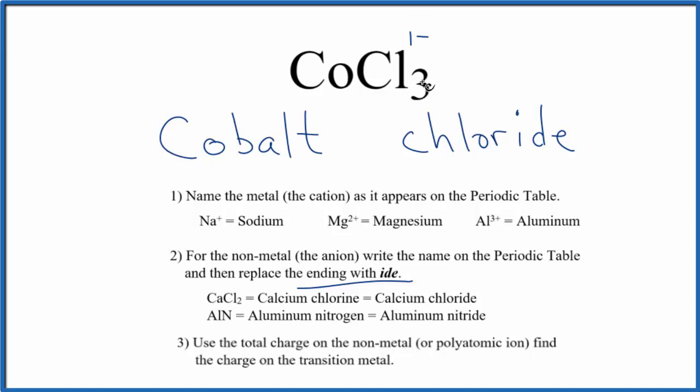So we have this one minus, and we have three of them. Three times one minus, that's three minus. The cobalt has to be three plus. And we're going to show that by putting a Roman numeral three in parentheses between the cobalt and the chloride.